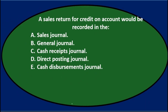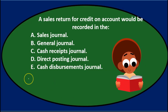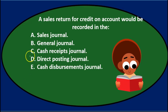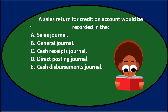First question: a sales return for credit on account would be recorded in the A. Sales Journal, B. General Journal, C. Cash Receipts Journal, D. Direct Posting Journal, E. Cash Disbursements Journal. We will read through these and see if we can eliminate some of the answers with the process of elimination.